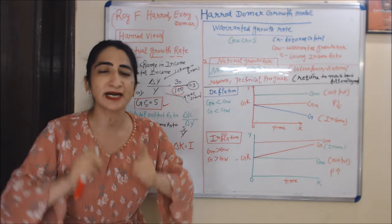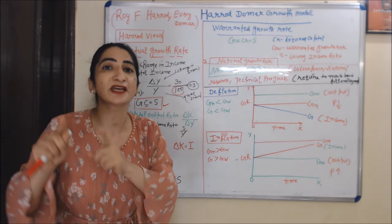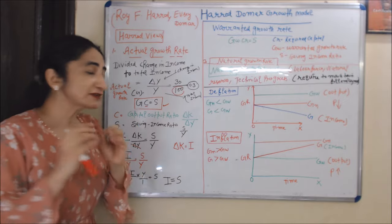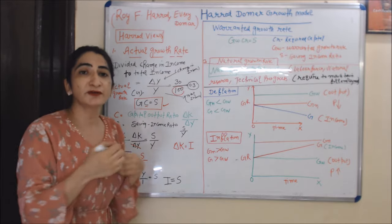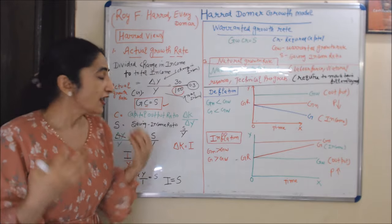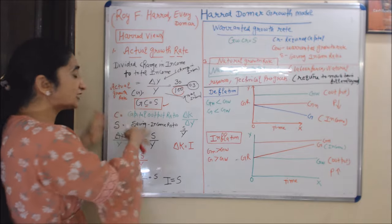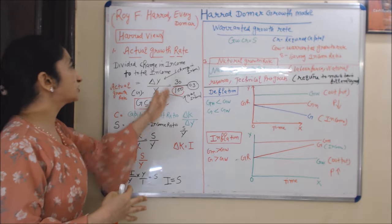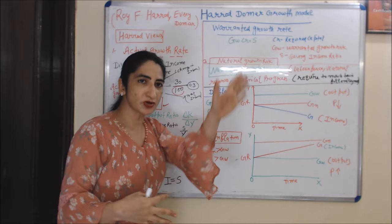Harrod and Domar basically define growth in terms of saving and productivity of capital. Harrod talks about three types of growth: actual growth rate, warranted growth rate, and natural growth rate.